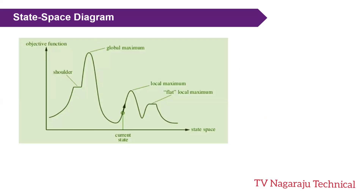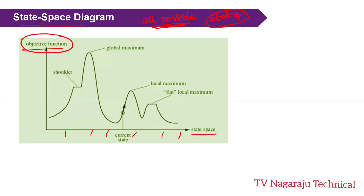Now let's look at the state space diagram. A state space diagram is a visual representation of all possible states the search algorithm can reach. The x-axis represents all possible states and the y-axis represents the values of the objective function corresponding to each state.